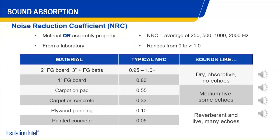The goal of absorptive materials is to improve speech intelligibility, reduce echo, and reduce reverb within a space. Harder surfaces — plywood, paneling, painted or polished surfaces — tend to reflect a lot of sound. Softer materials like fiberglass boards, matted materials, and perforated materials absorb much more sound. Many acoustic boards are specifically perforated to add surface area and improve their absorptive properties. We're going to play a couple more sound bites to demonstrate the difference between a very dry, highly absorptive space versus a very live, echoey reverb chamber.